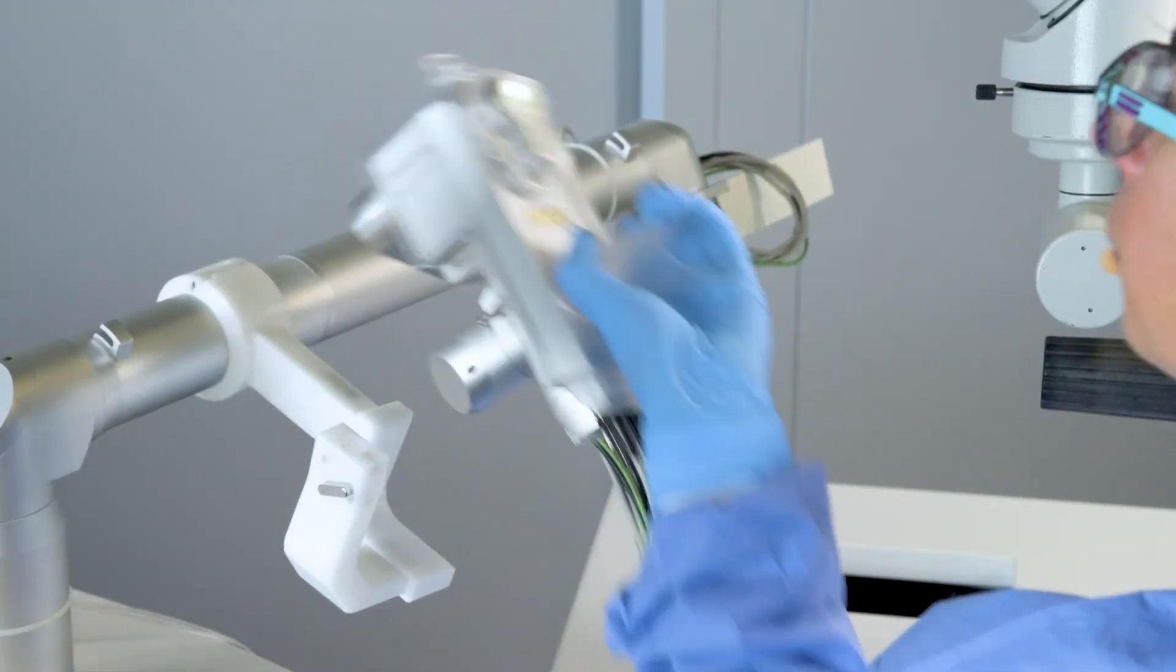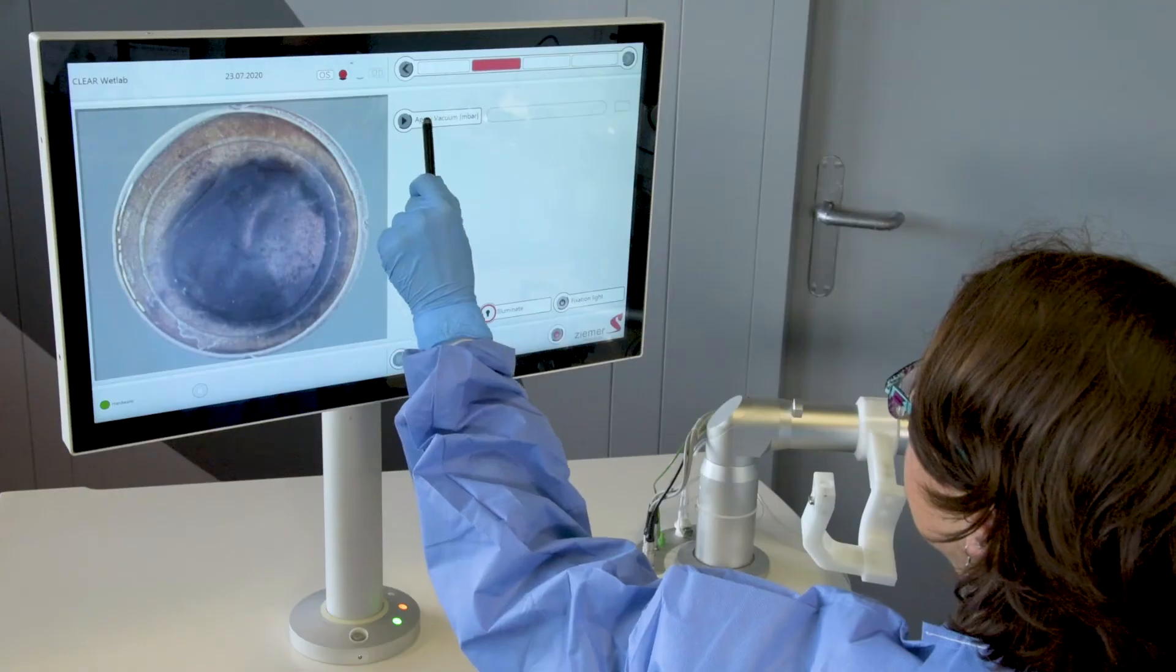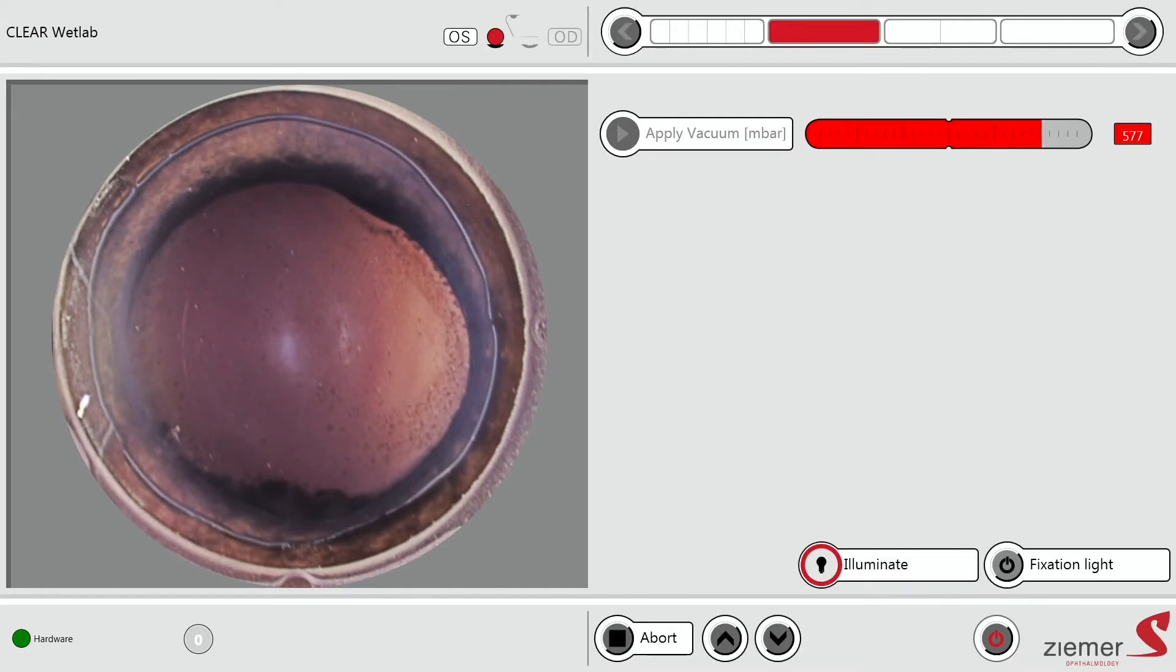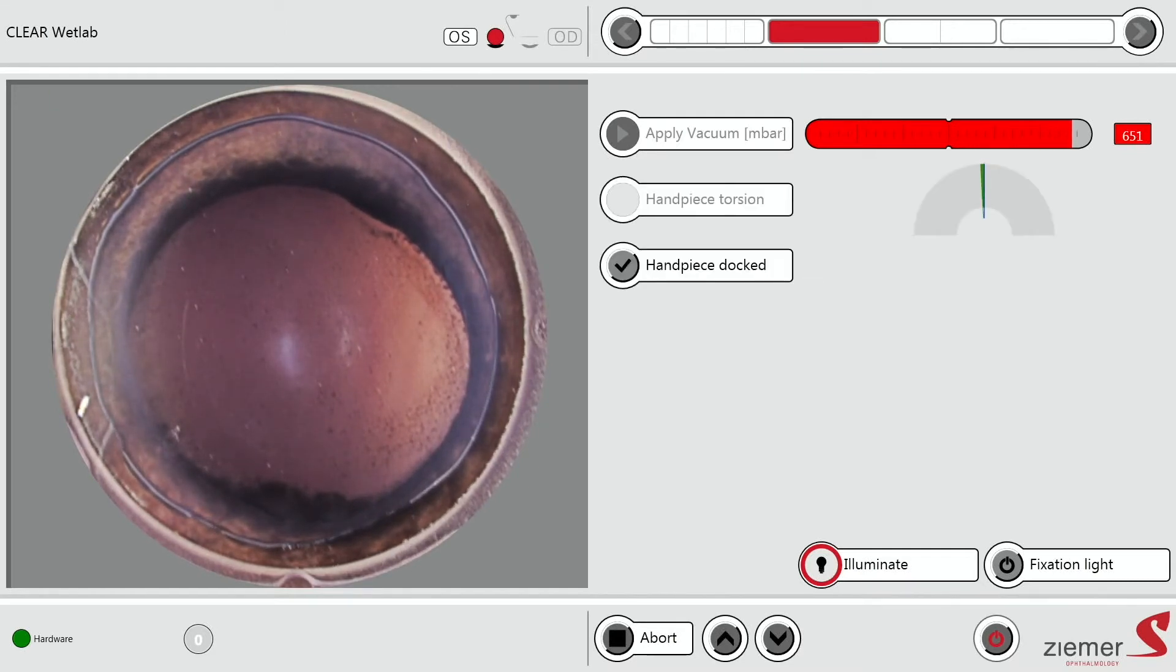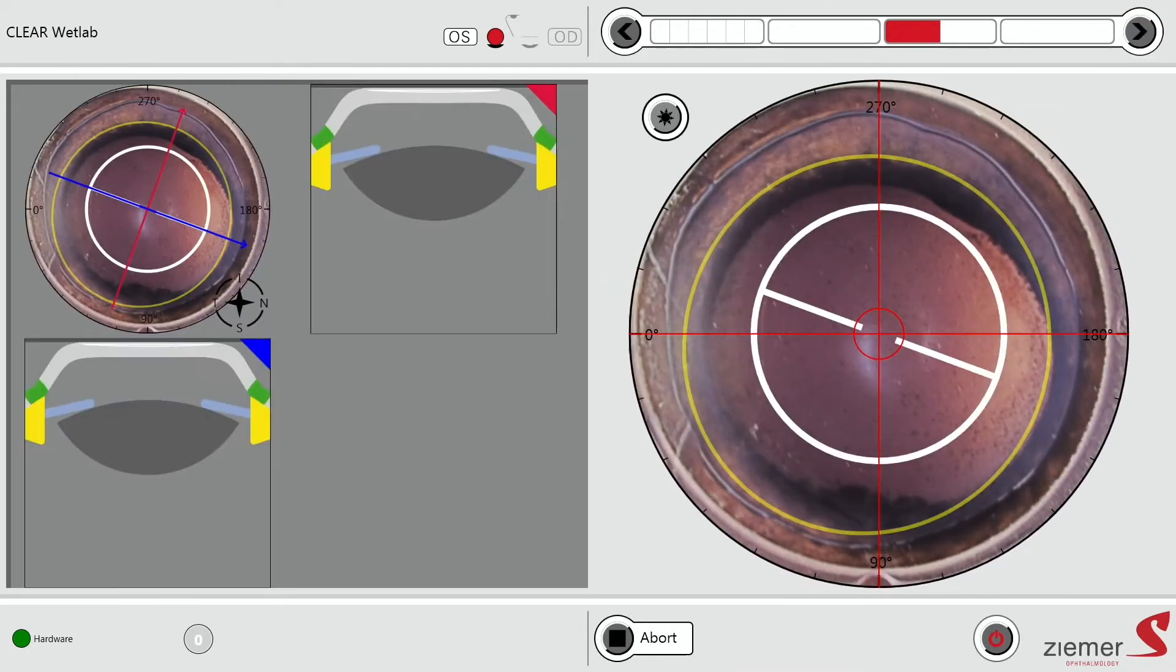Then I take the end piece, apply it on the eye. Then I can apply the vacuum. The vacuum is being built. Once the value is reached, the target value is reached, I can set the end piece is docked and then I can proceed.